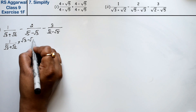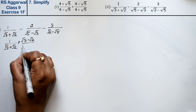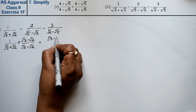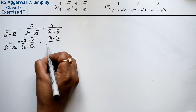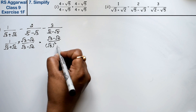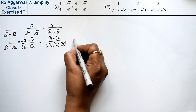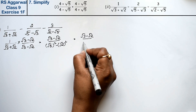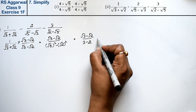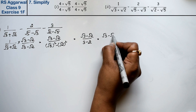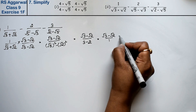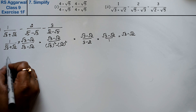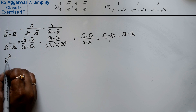For 1/(√3 + √2), we rationalize by multiplying by (√3 - √2)/(√3 - √2). The denominator becomes √3² - √2² = 3 - 2 = 1. So this gives √3 - √2.